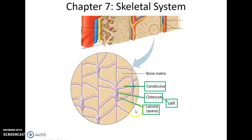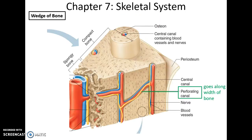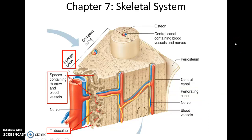Looking closer, you can see little pockets within the connective tissue called lacunae — lacuna for one, lacunae for many. In each lacuna is an osteocyte, or bone cell. There are also little tunnels called canaliculi — canaliculus for one — that connect the various lacunae to the central canal. You can also find perforating canals going along the width of the bone, also filled with blood vessels and nerves.